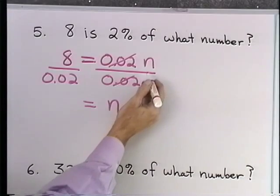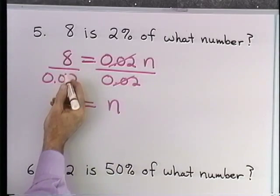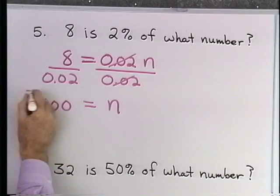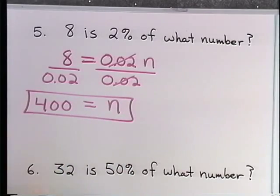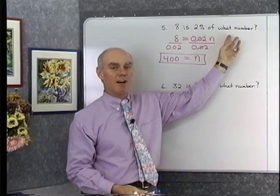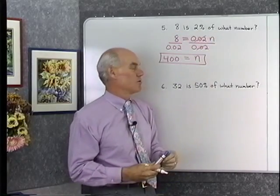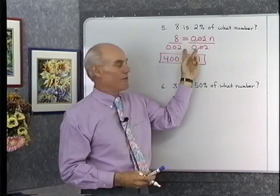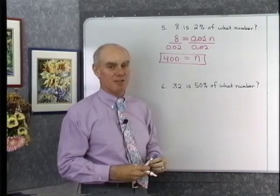I'll have left just n on the right side, and when I divide 8 by 0.02, I'll get 400. So n is equal to 400, and that seems to make sense. 8 is 2 percent of 400. I just simply translate into an equation, solve that equation, and there's my result, n is equal to 400.